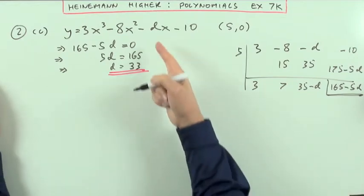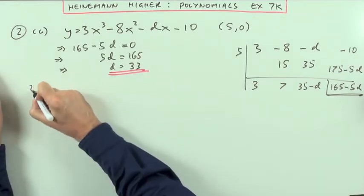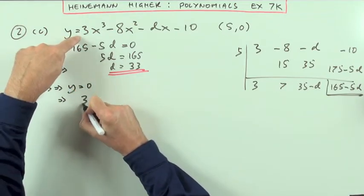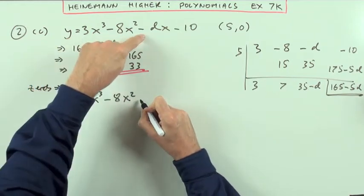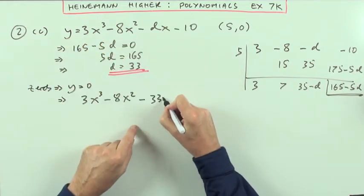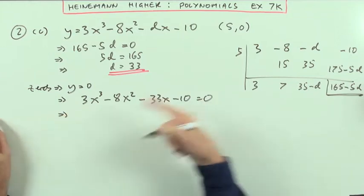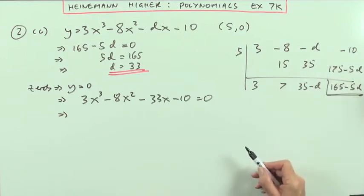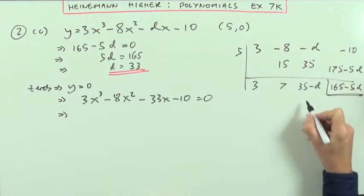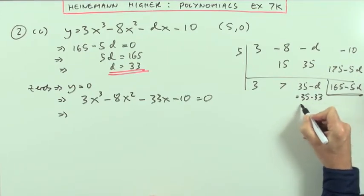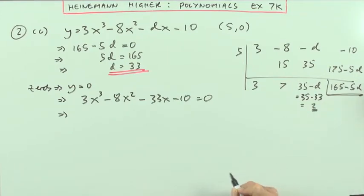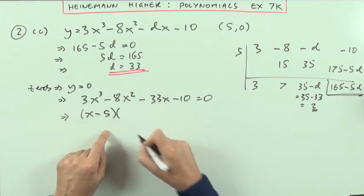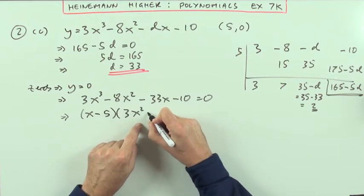Now there's two things I can do, so I can go back and fill that in, so I'm looking for the zeros then. So the zeros means that y should equal 0, which means that this expression, 3x cubed minus 8x squared minus, now I know it's 33x minus 10 should equal 0. And I've already done the synthetic division, I don't need to do this again, just replacing that d with a 33. Because I'm just replacing that d with a 33, so it's going to be 35 minus 33, so that part's going to be 2. So this part here is going to be x minus 5 times, and the remaining part is 3x squared plus 7x plus 2 equals 0.